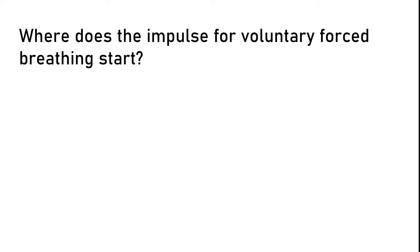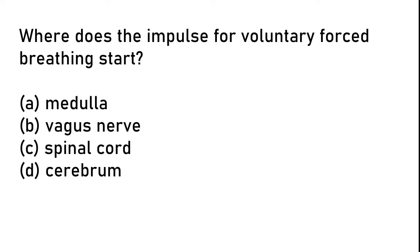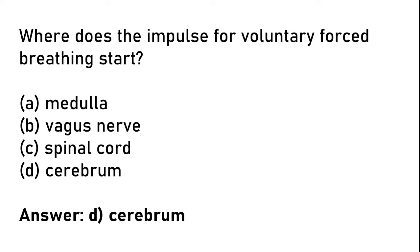Where does the impulse for voluntary forced breathing start? (A) Medulla, (B) vagus nerve, (C) spinal cord, (D) cerebellum. The correct answer is option D: cerebrum.